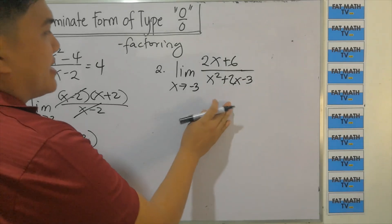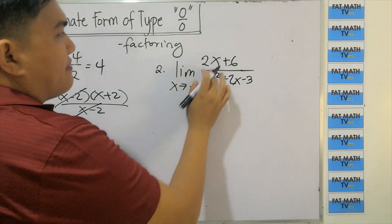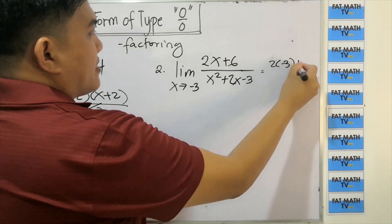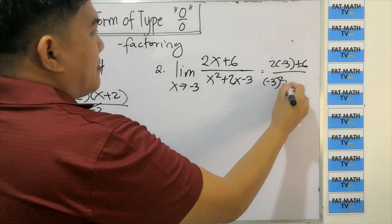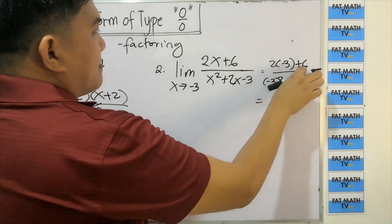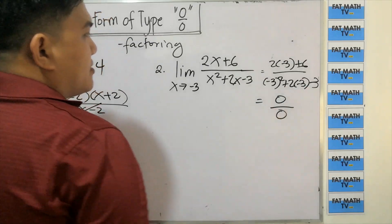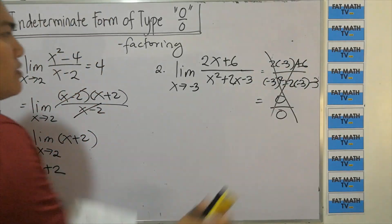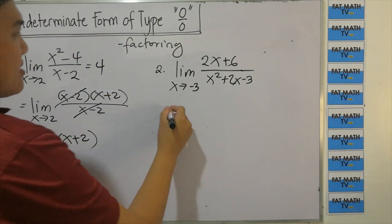If we substitute negative 3 into this expression, we get 2 times negative 3 plus 6 over negative 3 squared plus 2 times negative 3 minus 3. That is negative 6 plus 6, which is 0, over 9 minus 6 minus 3, which is also 0. So this is an indeterminate form, and we don't do direct substitution — we factor first.